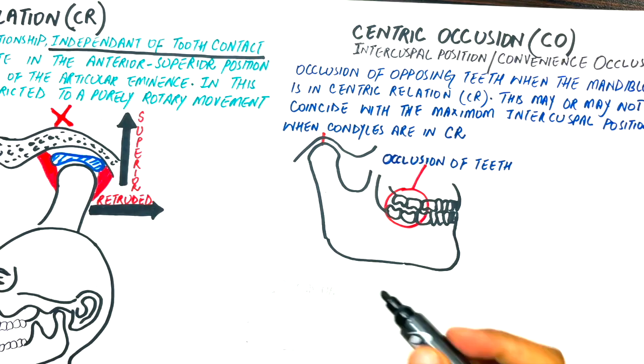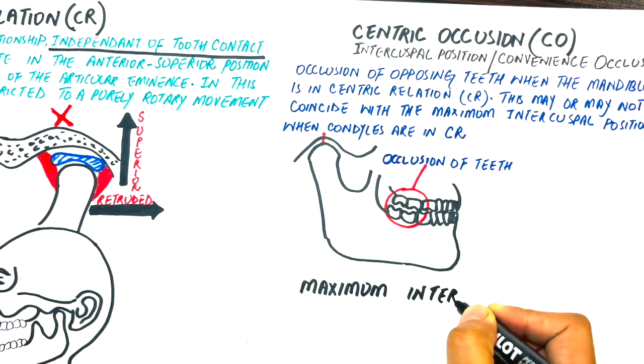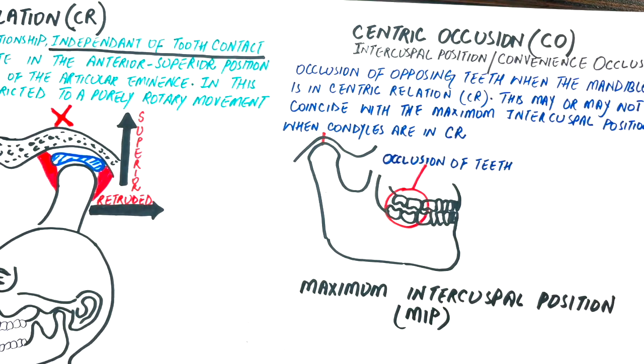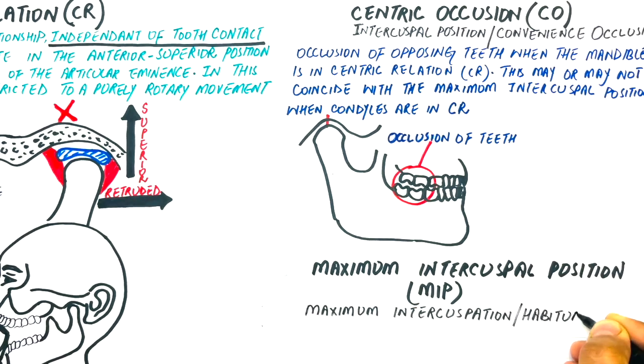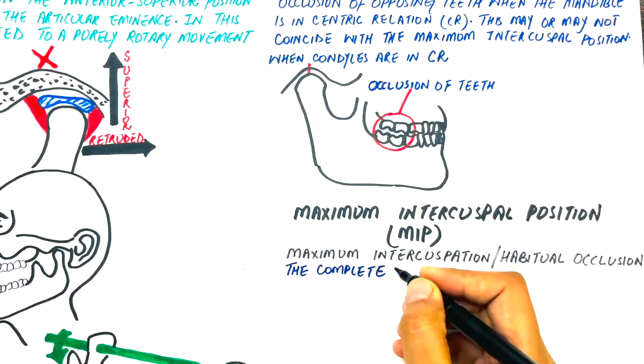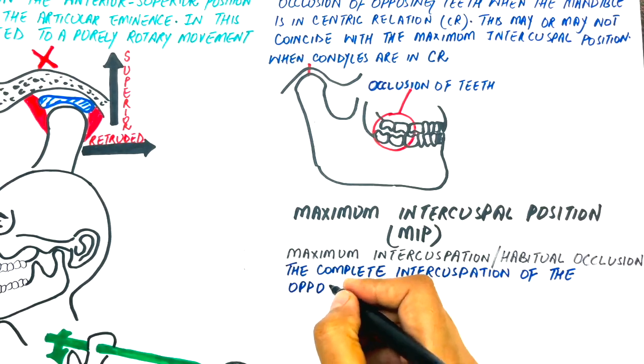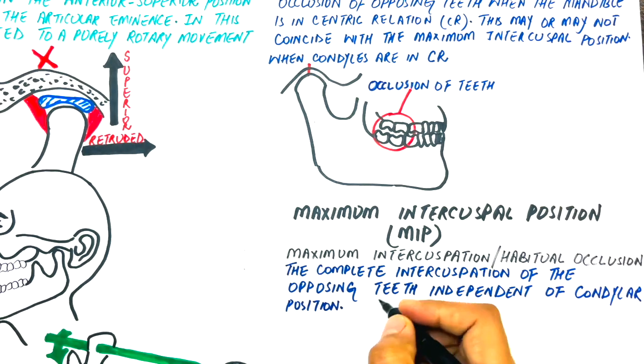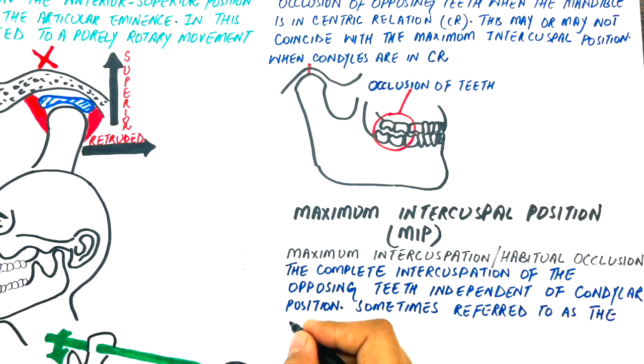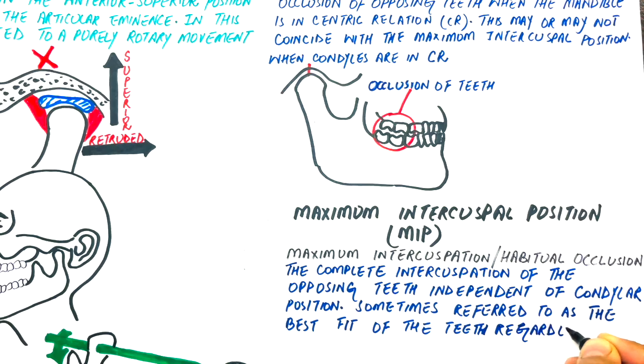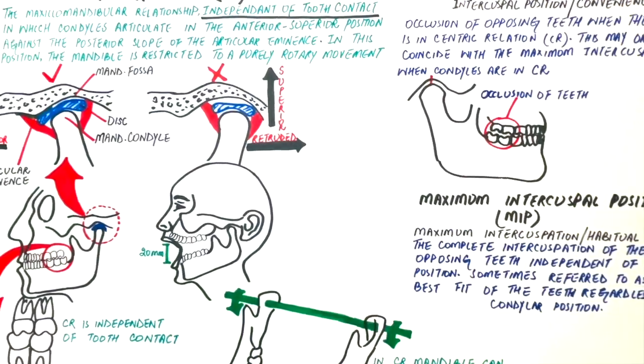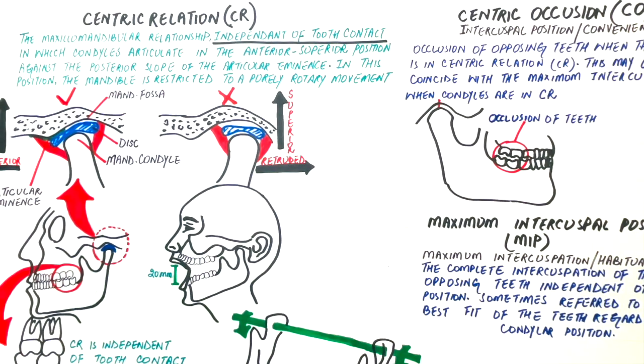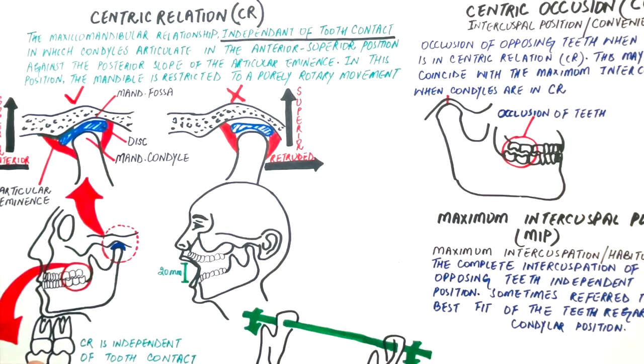Now, what is the maximum intercuspal position? Maximum intercuspal position, or MIP, also known as maximum intercuspation or habitual occlusion, is the complete intercuspation of the opposing teeth independent of condylar position, sometimes referred to as the best fit of the teeth regardless of the condylar position. What matters in MIP is the most intimate contact between teeth of both jaws, which is independent of where the condyles are placed within the glenoid or mandibular fossa.